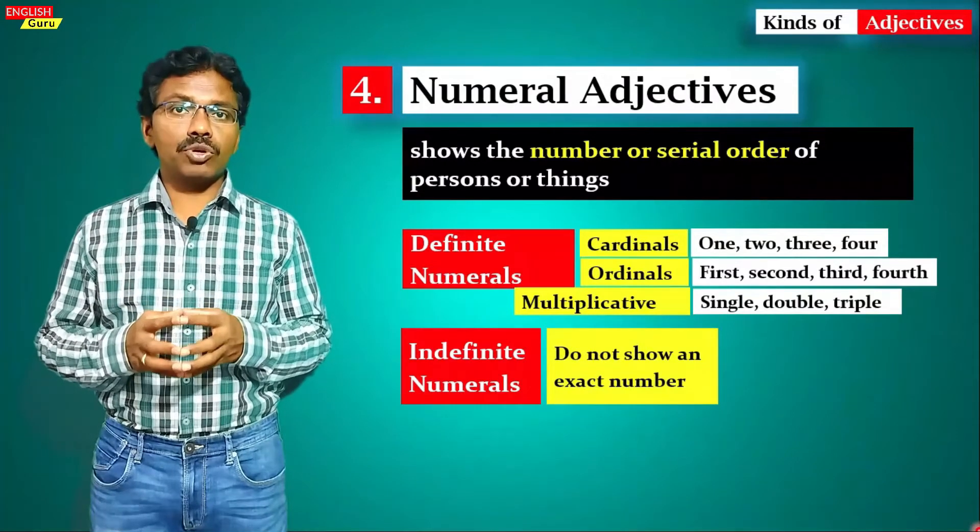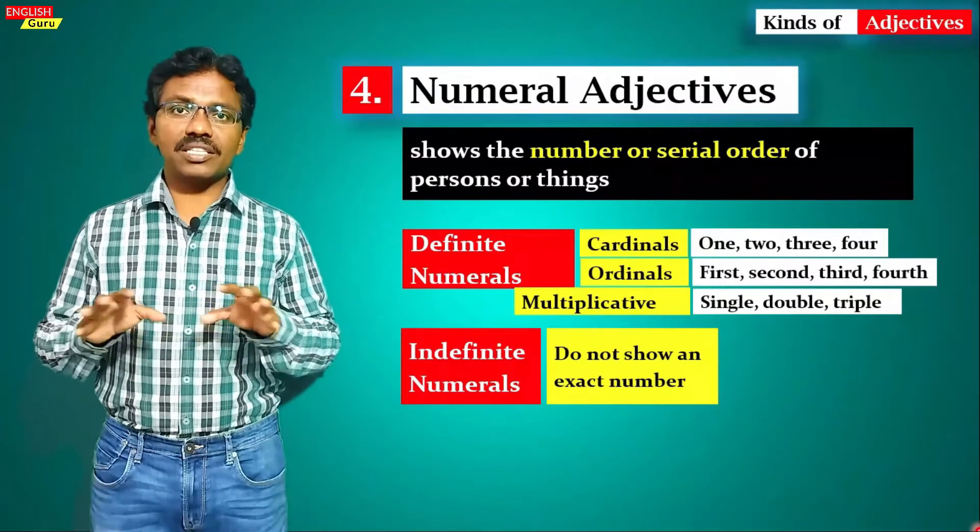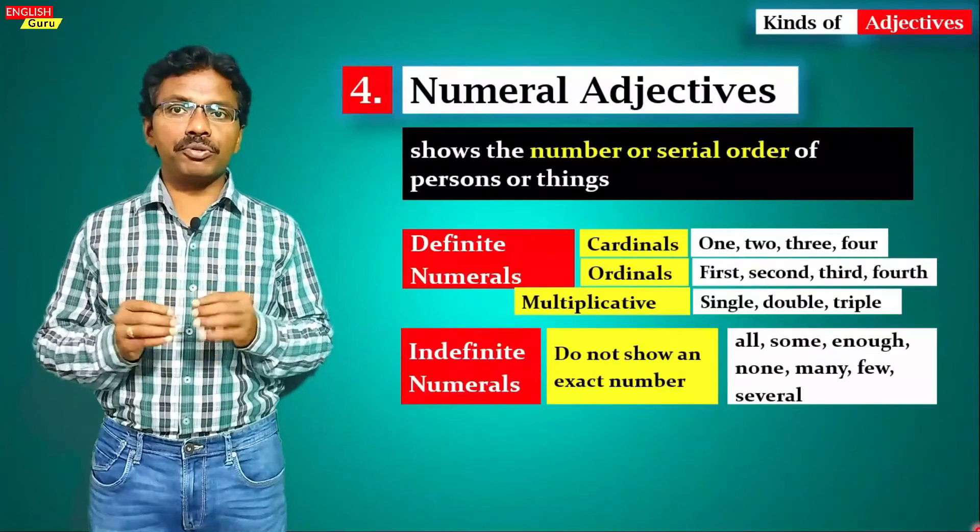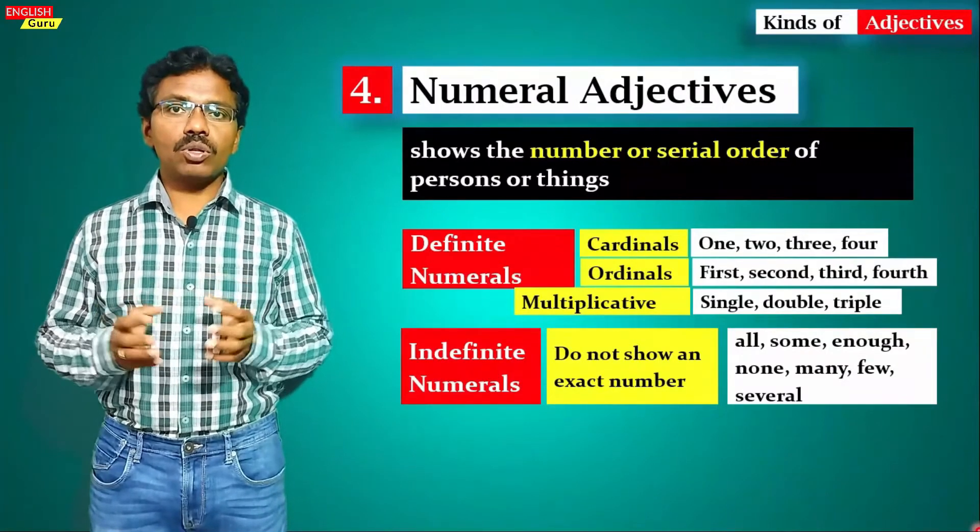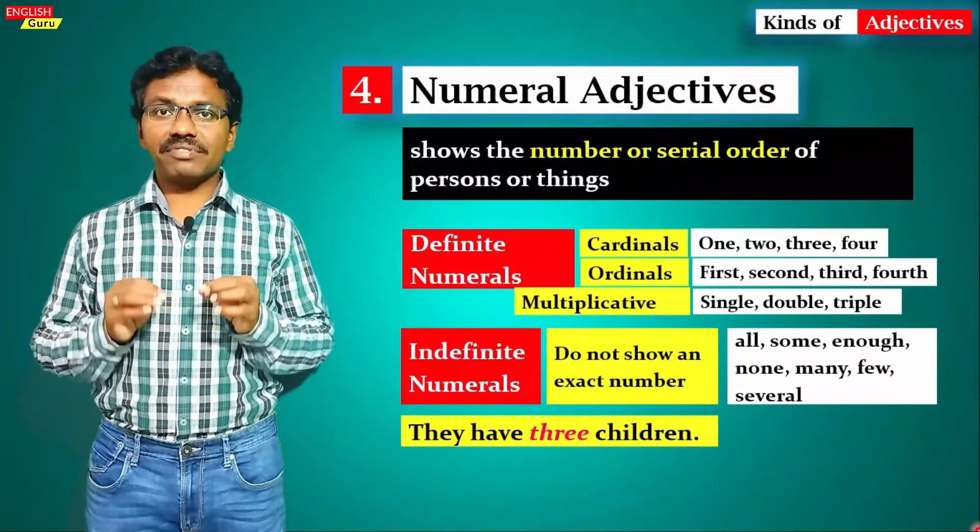When it comes to indefinite numerals, they do not show an exact number. They talk in a general manner. Examples include all, some, enough, none, many, few, and several. These are all indefinite numeral adjectives. For example, they have three children.